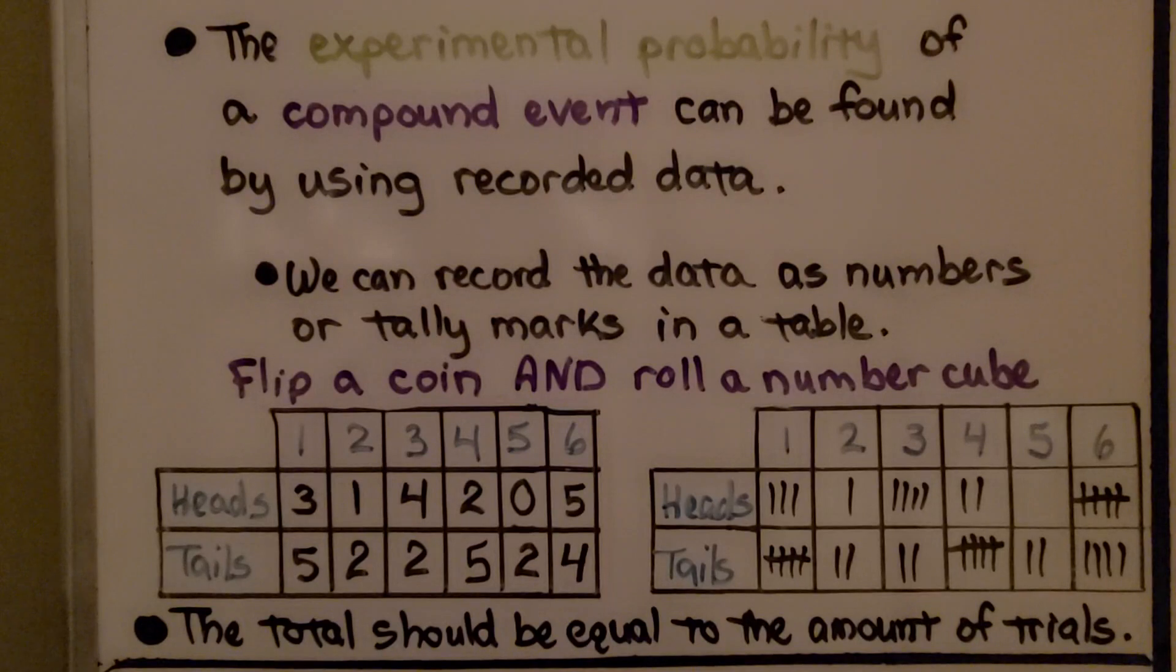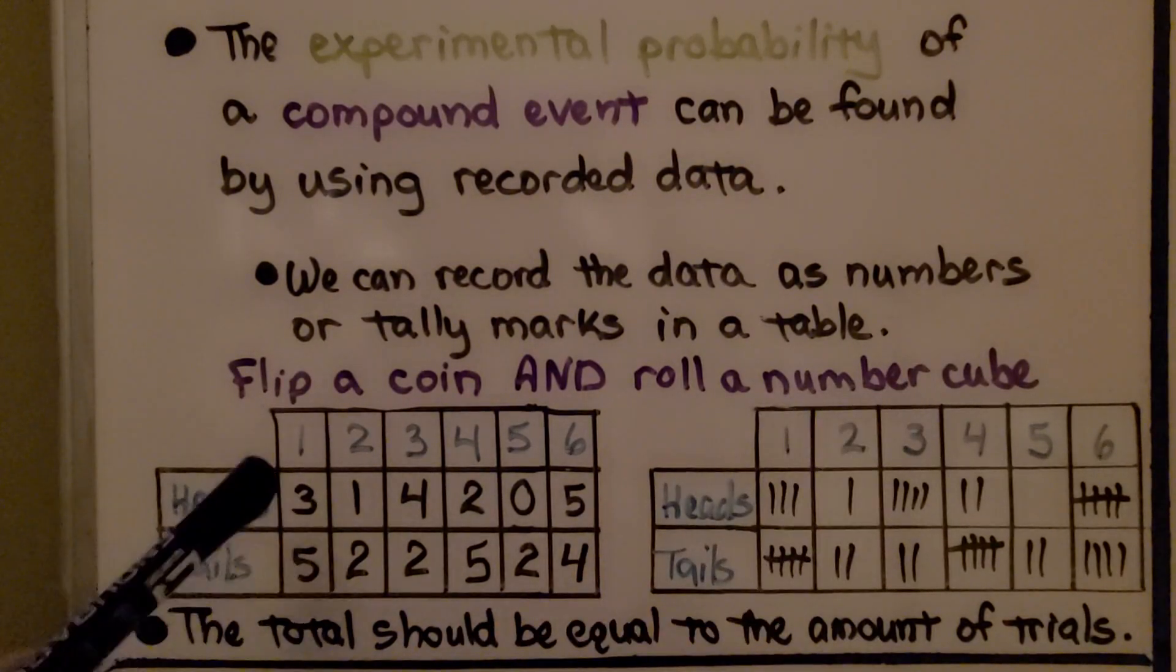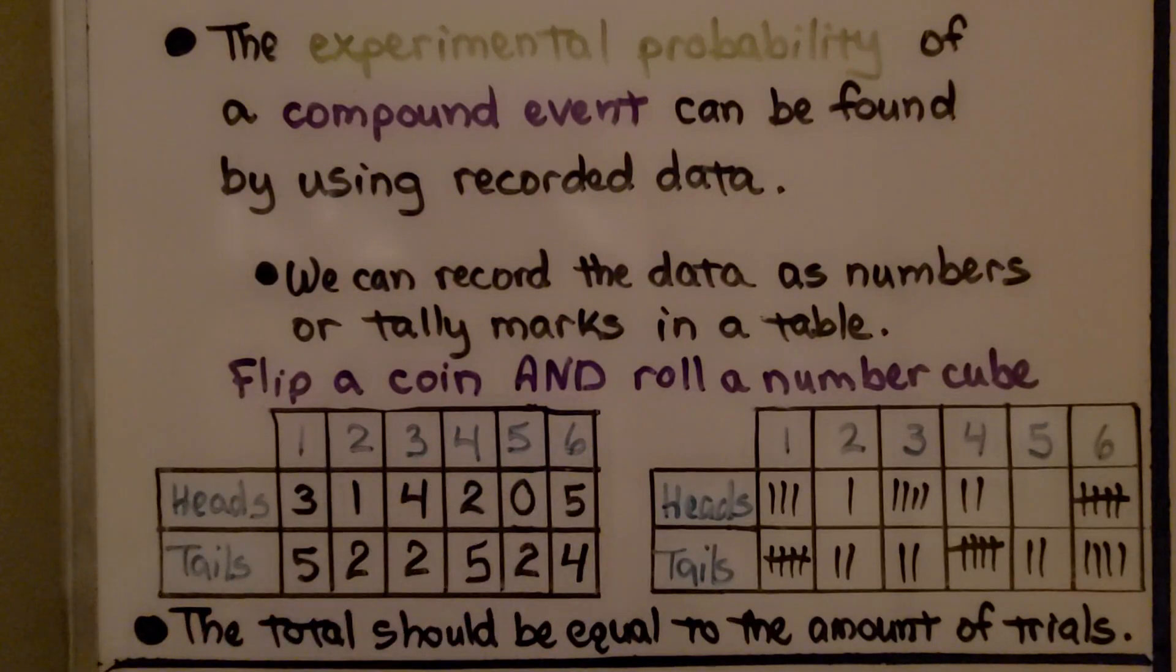The experimental probability of a compound event can be found by using recorded data. We can record the data as numbers or as tally marks in a table. So the compound event would be flip a coin, we'd get heads or tails, and roll a number cube, we'd get one, two, three, four, five, or six. And the total should be equal to the amount of trials. When we add all these numbers up or count all these tally marks, it will be equal to the number of trials we performed.